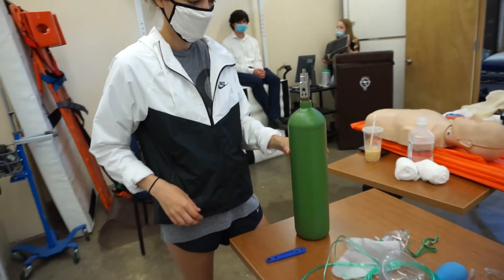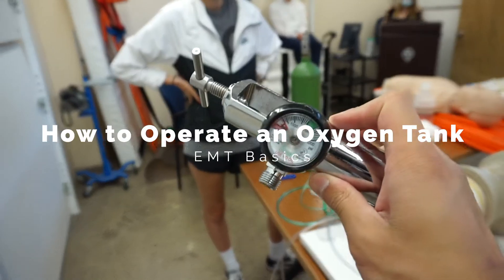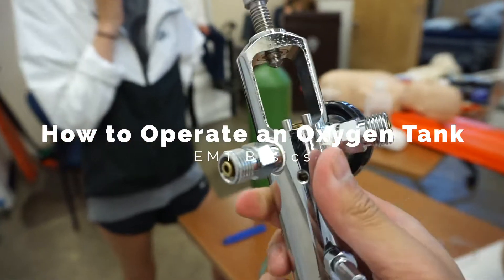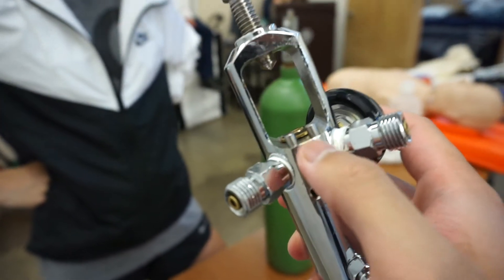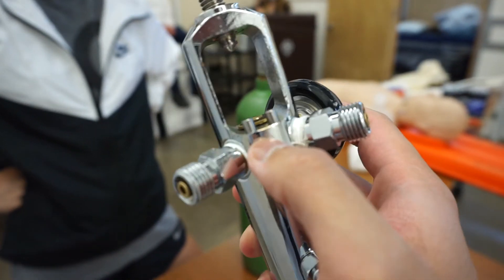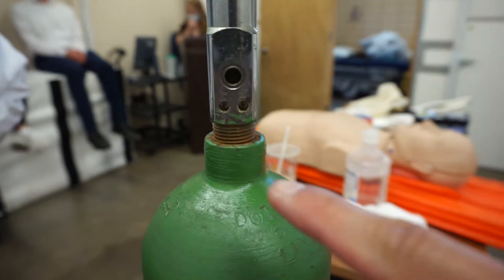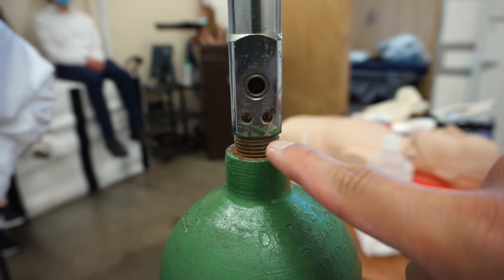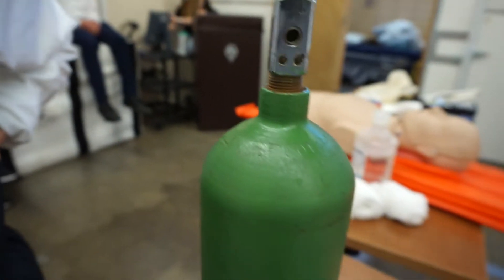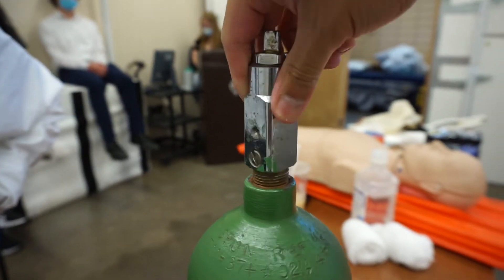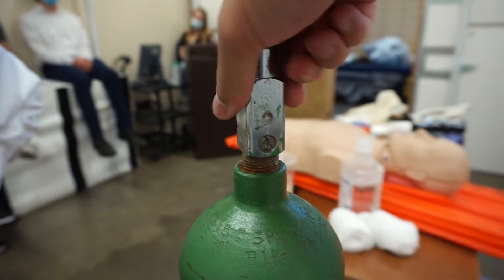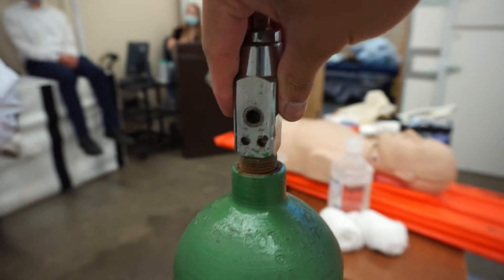Alright, so in this next skill we're going to learn how to apply a regulator to an O2 tank. What I want you guys to keep in mind is these two notches right here coming out of the regulator. I call them teeth and I want you to place the teeth inside of these two holes or gums. There's really only one way to apply it if you look all the way around the tank. No other side is going to have these two holes.